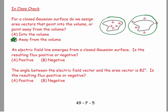And then the second question: if an electric field line emerges from a closed Gaussian surface, is the resulting flux positive or negative? And remember what we said.